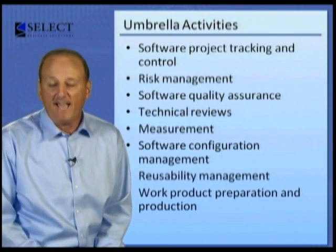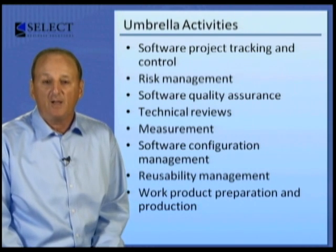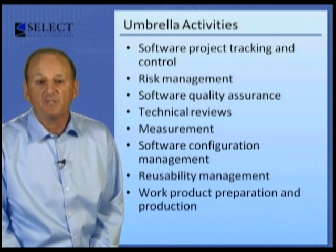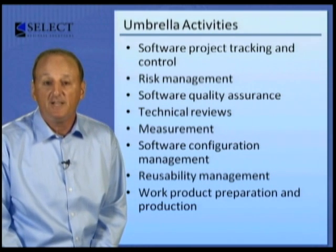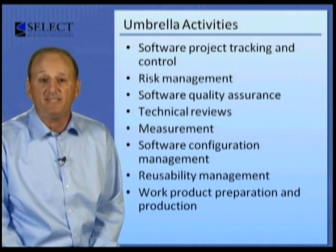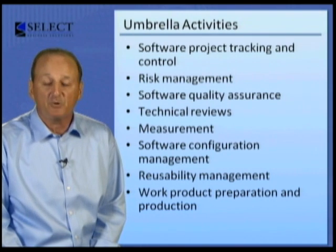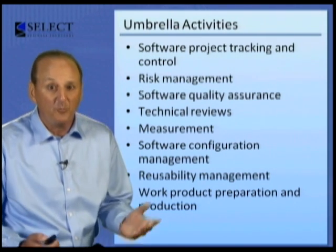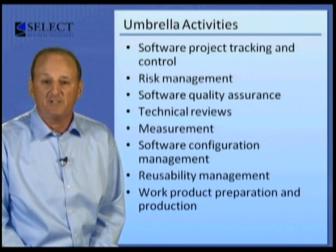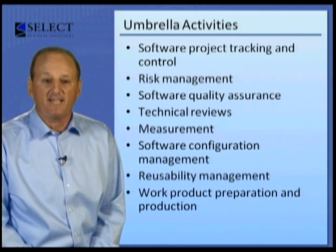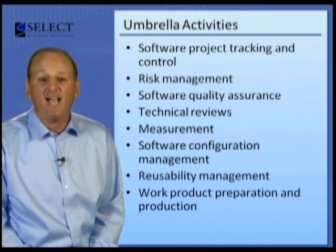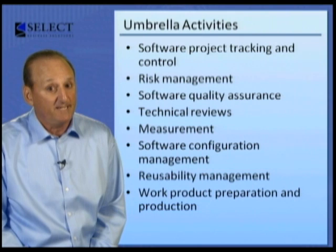The umbrella activities cover the entire software process. We begin with software project tracking and control, which assesses progress against the project plan and takes necessary action to maintain schedules. Managers and customers always ask, 'Where are we?' Software project tracking and control tries to answer that question. Another very important umbrella activity is risk management, which assesses risks that may affect the outcome of the project or the quality of the product.